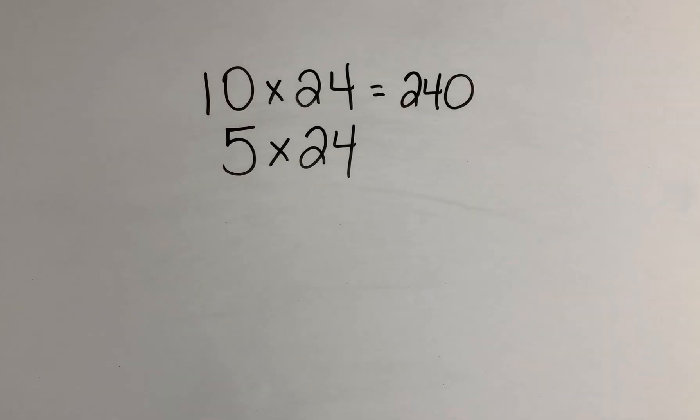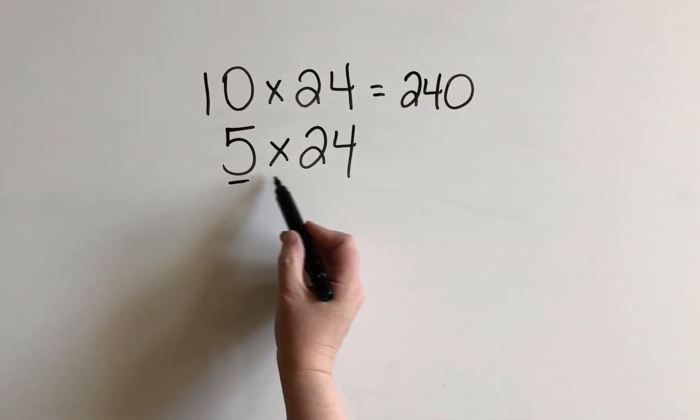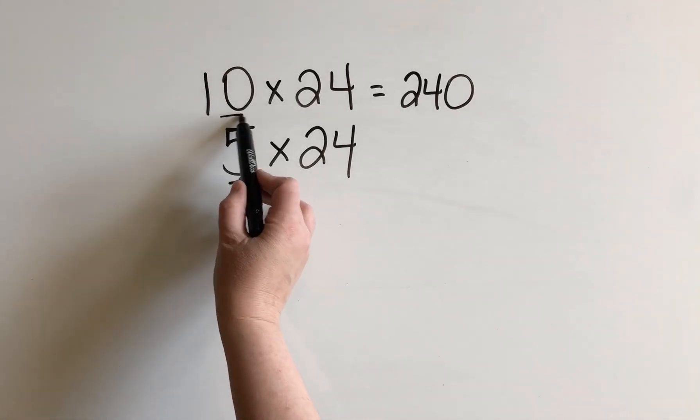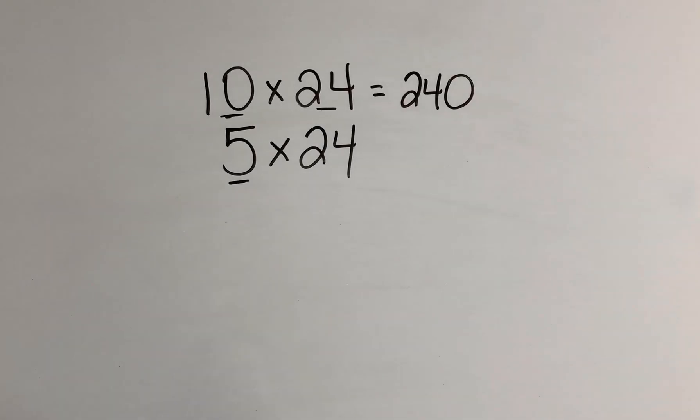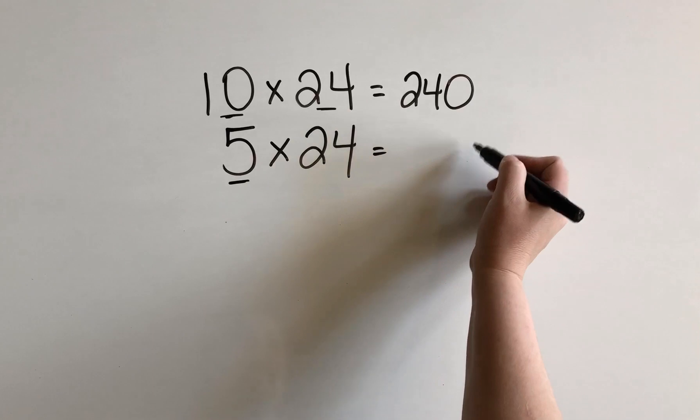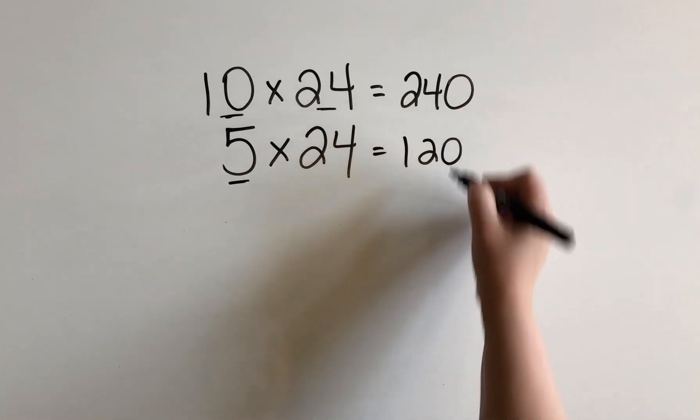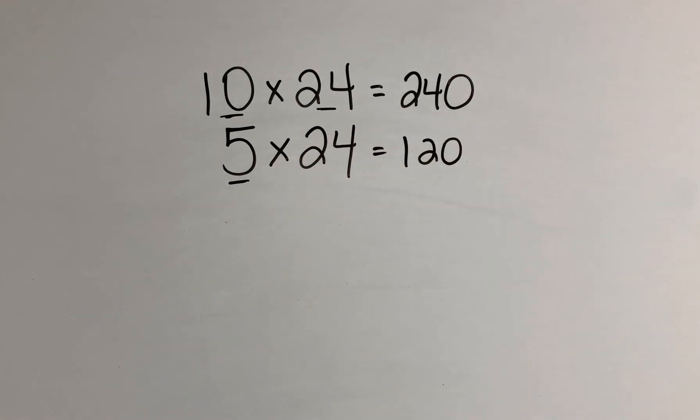And then we know that 5 groups of 24 is going to be half what 10 groups of 24 was. So our product will be half, which is 120. So this is how this strategy can help you out when you start working with really big numbers as well. Alright, make sure you check for more multiplication strategy videos and I hope you have a great day.